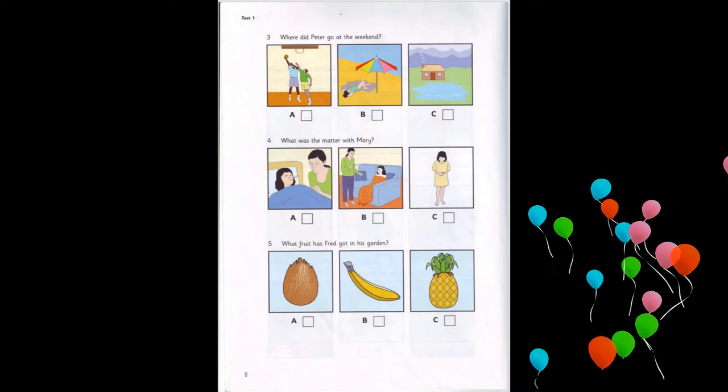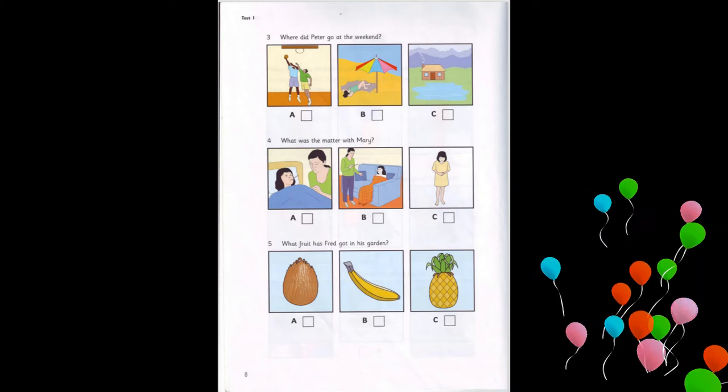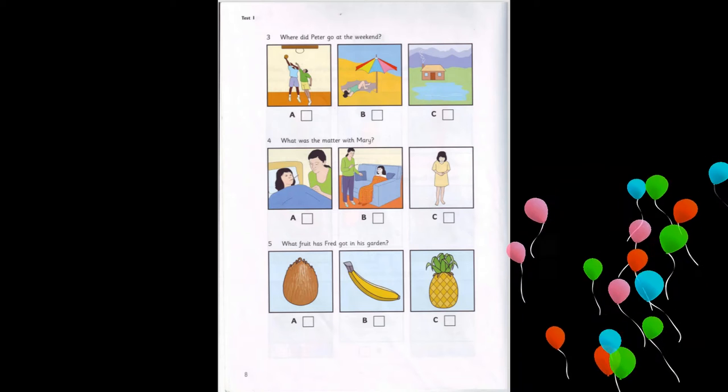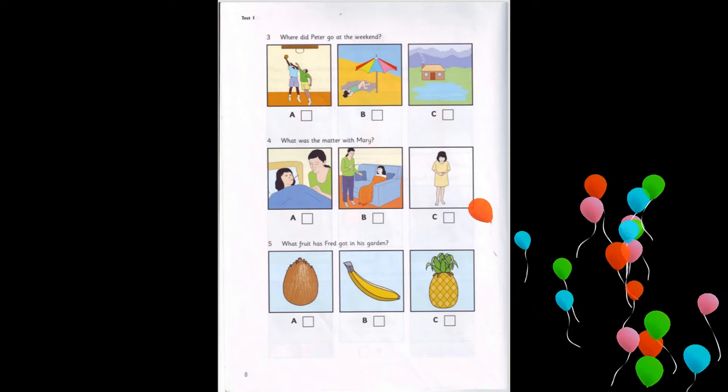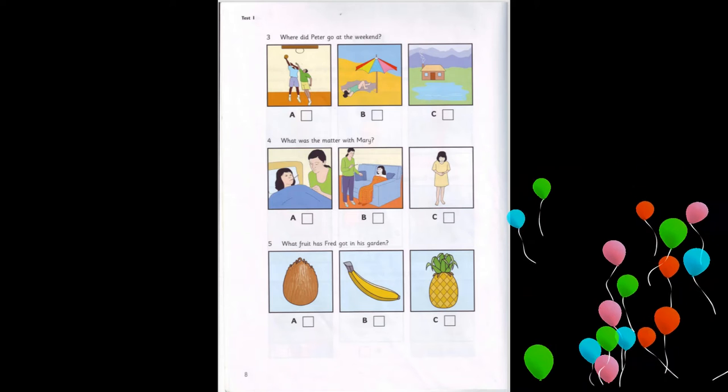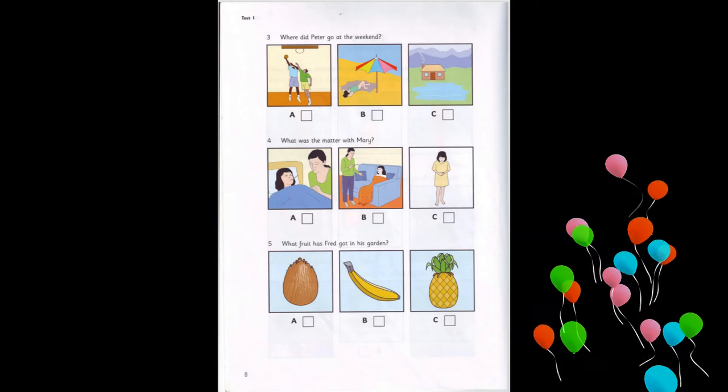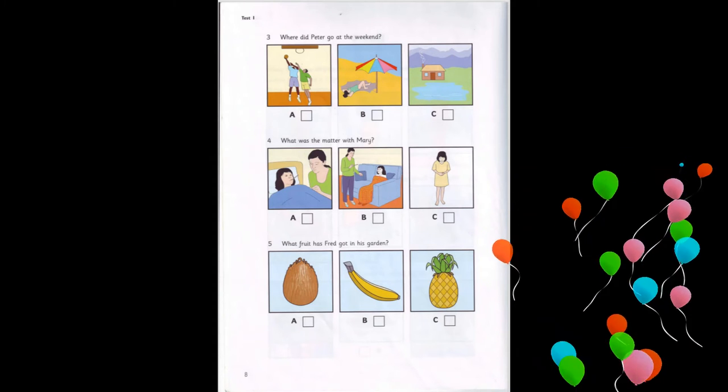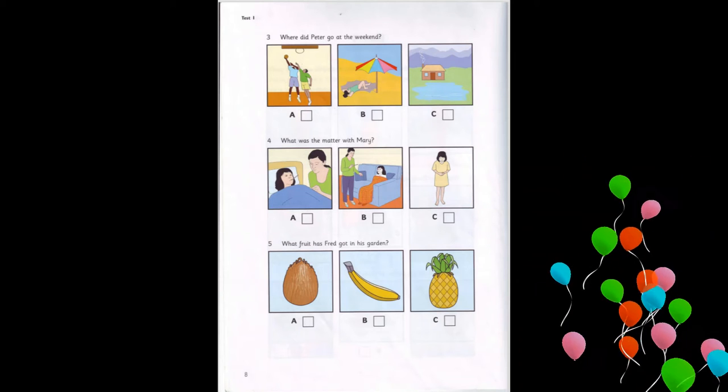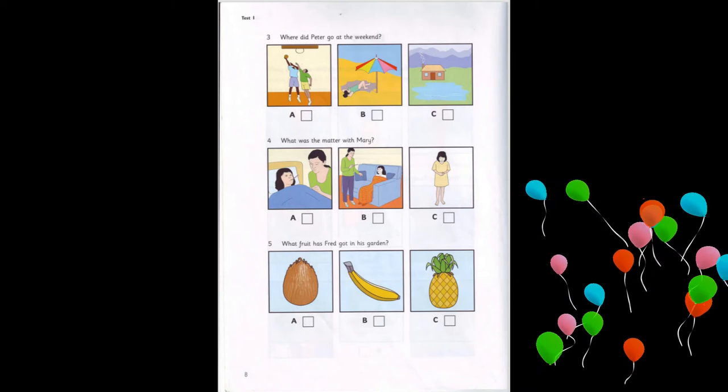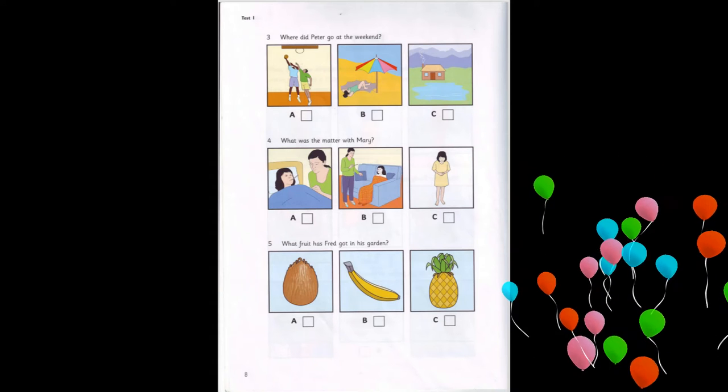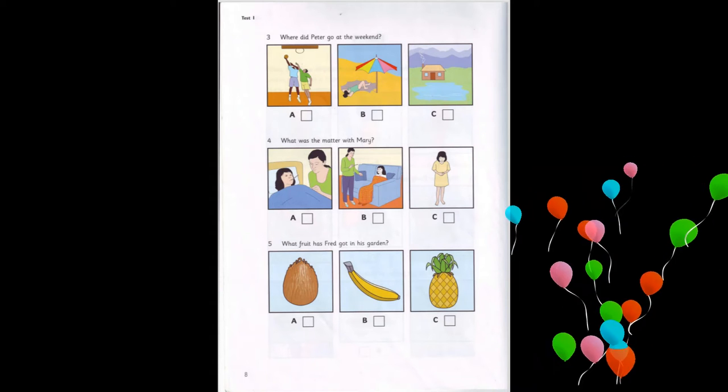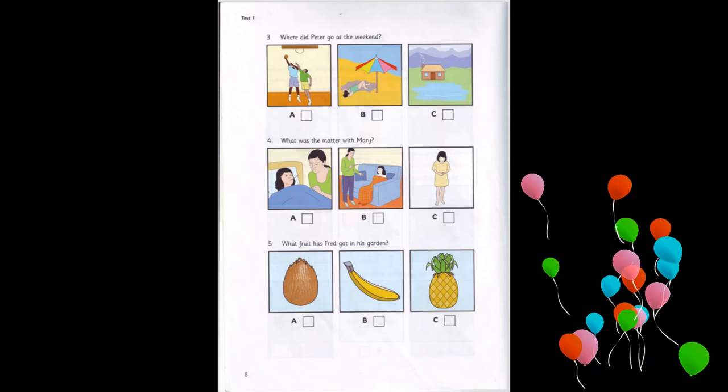Five. What fruit has Fred got in his garden? Mum, Fred's parents have got a new house in the country. It's very big. That's good. Has it got a garden? Yes, it has. And there's a lot of fruit. Oh. Does it have coconuts or bananas? No, but it's got a lot of pineapples.